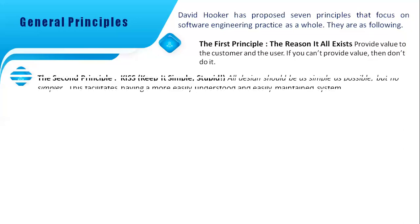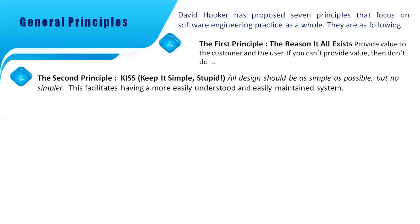The second principle is KISS — Keep It Simple, Stupid. There are many factors we may consider in any design effort. All design should be as simple as possible. This helps in more easily understanding and maintaining the system. Indeed, the more elegant designs are usually the simpler ones. The payoff is software that is more maintainable and less error prone.